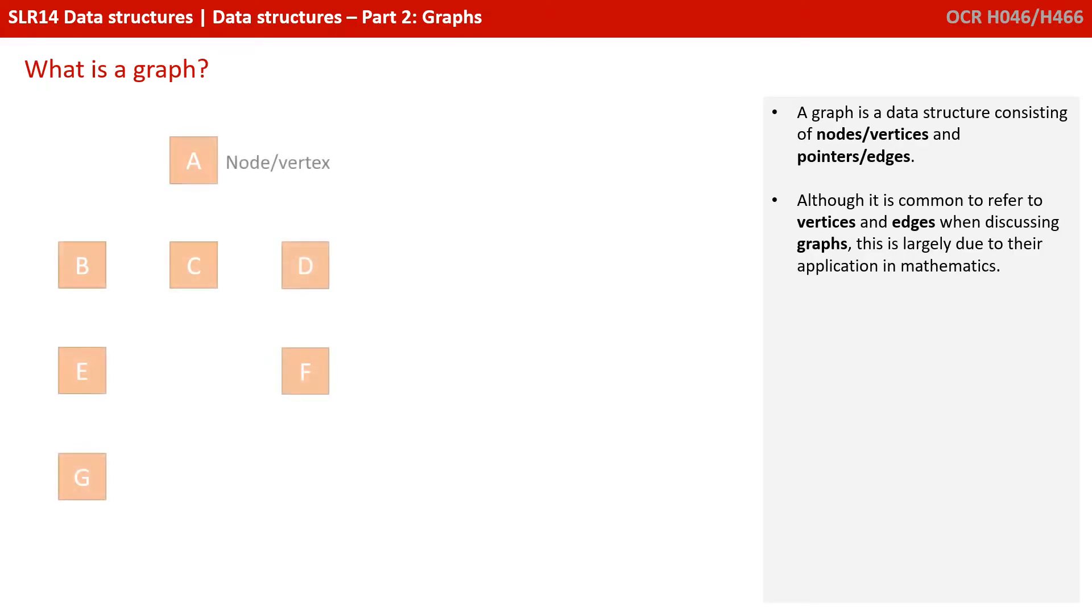A graph is a data structure consisting of nodes or vertices and pointers or edges. Although it's common to refer to vertices and edges when discussing graphs, this is largely due to their application in mathematics and both sets of terms are correct.